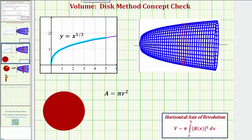We rotate this about the x-axis and it produces a solid that looks similar to this. Then we take one slice of the solid, and our first question is: what would be the area of this one slice? Notice how this slice would be a circle, and the area for a circle is A equals pi r squared.